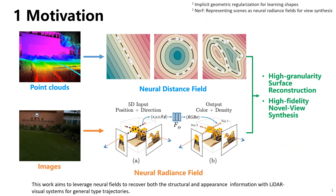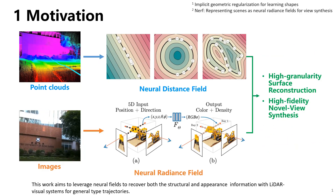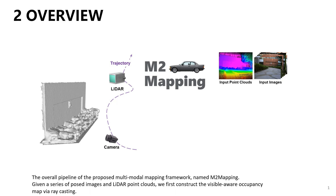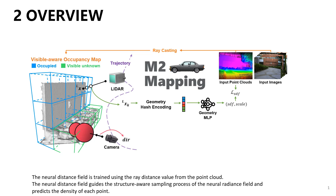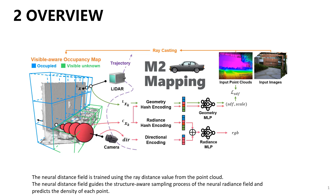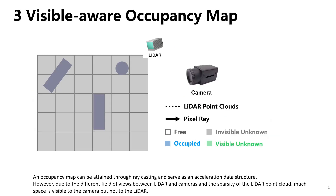This work aims to leverage neural fields to recover both the structural and appearance information with LiDAR visual systems for general type trajectories. The overall pipeline of the proposed multimodal mapping framework, named M2 Mapping: given a series of posed images and LiDAR point clouds, we first construct the visible-aware occupancy map via ray casting. The neural distance field is trained using the ray distance value from the point cloud, and guides the structure-aware sampling process of the neural radiance field to predict the density of each point. The sample points and direction are encoded as features, and the MLP forwards the concatenated features to infer color. Volume rendering accumulates densities and color for novel view synthesis.